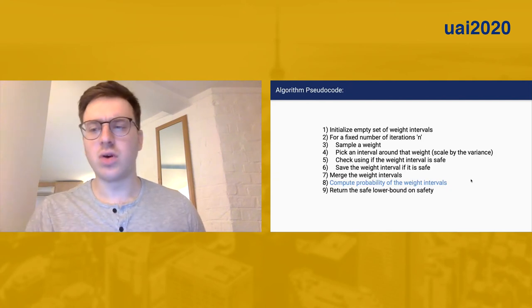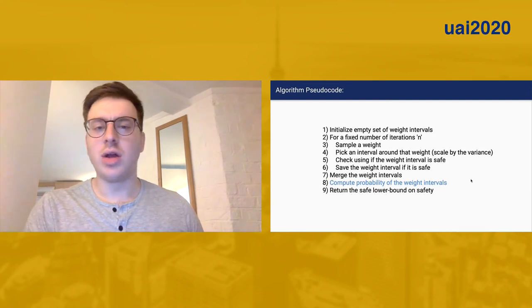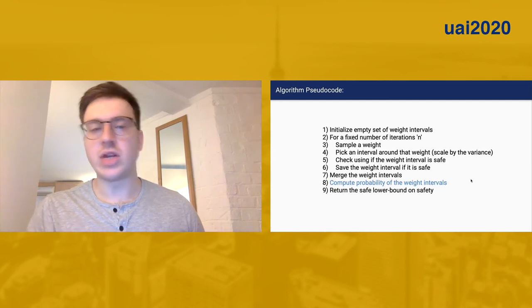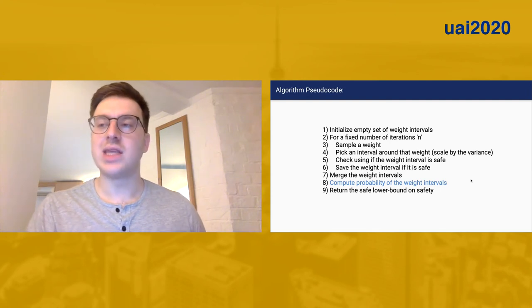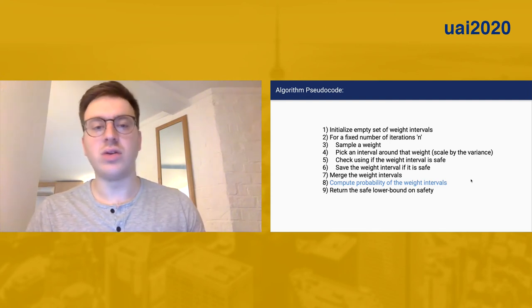To go over exactly how we compute probabilistic safety, we have some unknown safe set of weights. For some iterations, we will sample a weight, pick an interval about that weight, check if it's safe, and continue. At the end, we'll have several intervals of safe weights.